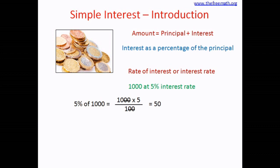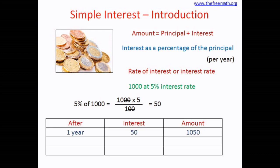Now, the interest is defined as a percentage on the principal per year — it also depends on how many years you are going to use the money. In this example, if you use 1000 rupees at a 5% rate for one year, the interest is 50 rupees, because this interest rate is per year. So if you use this money for one year you pay 50 rupees as interest, and your total amount will be 1050.